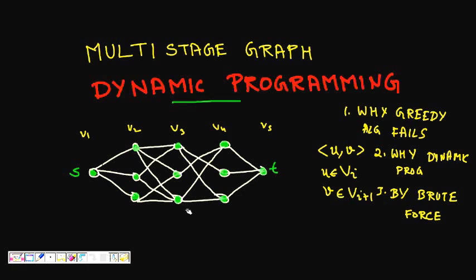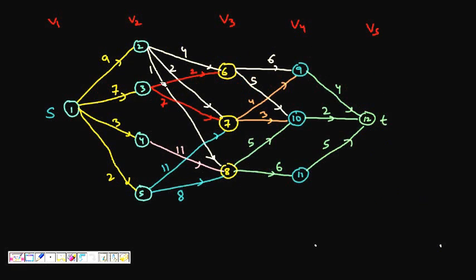We have one concrete example. In this graph, the source is in stage V1. The second stage V2 has nodes 2, 3, 4, 5. The third stage V3 has nodes 6, 7, 8. The fourth stage V4 has nodes 9, 10, and 11. The last stage V5 has only one node — the sink, node 12.